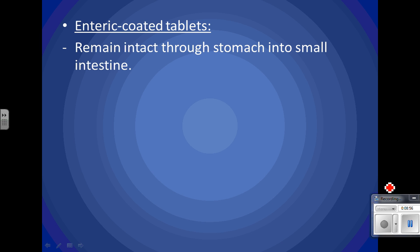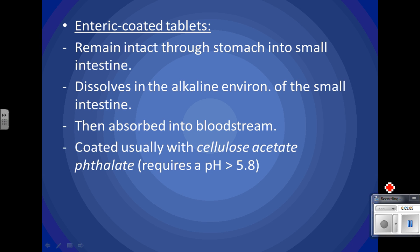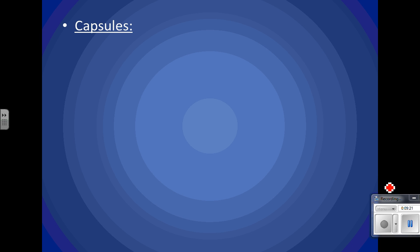Enteric coated tablets remain intact through the stomach and into the duodenum or small intestine. The alkaline environment is what breaks them down, and then they're absorbed into the bloodstream. They're usually coated with cellulose acetate phthalate, which requires a pH above 5.8 to break down — it's resistant below that.